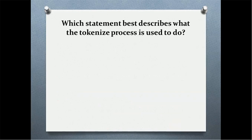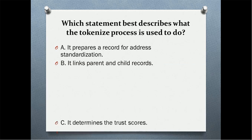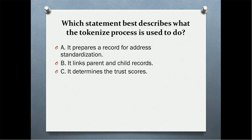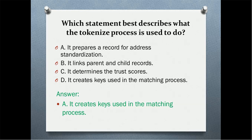Which statement best describes what the tokenization process is used to do? Options are: it prepares a record for address standardization; it links parent and child records; it determines the trust score; it creates keys used in the matching process. The correct answer is it creates keys used in the matching process.